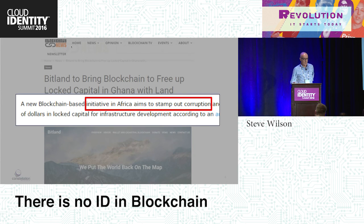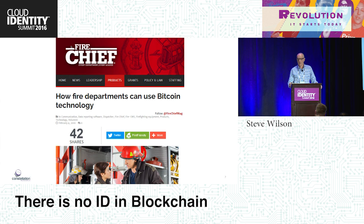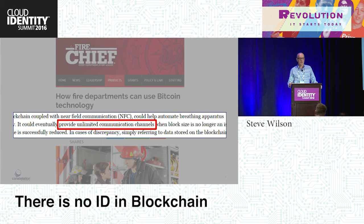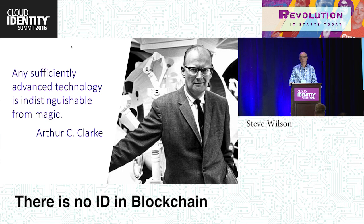It's said that blockchain will crowdsource the governance of the financial system — a million miles from what Nakamoto was trying to do. It's said that blockchain is going to end corruption in Africa. We already saw something this morning about blockchain being quoted by UNICEF as something that will help them solve childhood poverty. I find those sorts of claims absolutely abhorrent. The firefighters are told that once they use Bluetooth to connect their internet-connected devices onto the blockchain, whatever that means, they're going to get unlimited communication channels.